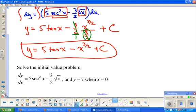So ultimately, what we end up with is y equals, or f of x equals, 5 tangent of x minus x to the three halves plus 7. And we are done with that.